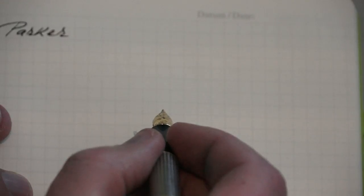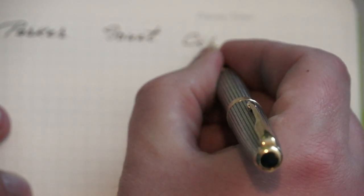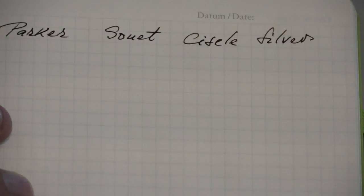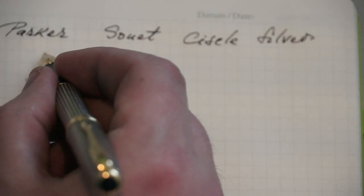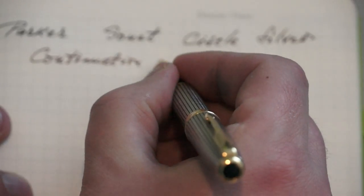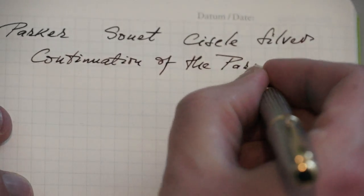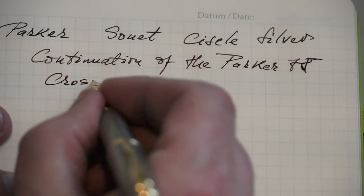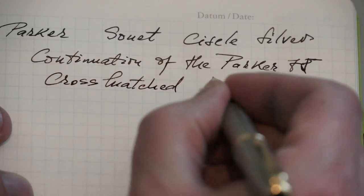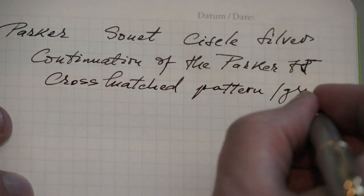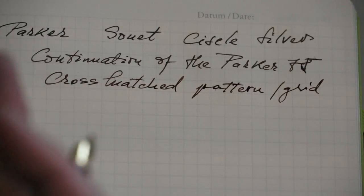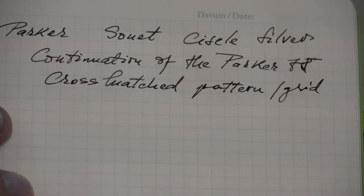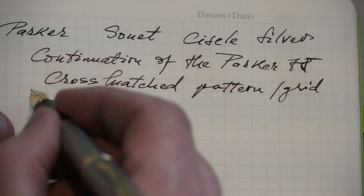This is the writing sample. This is the Parker Sonnet Cisele Silver. As mentioned before, this is a continuation of the Parker 75 family. And it has a cross hatched pattern or grid, and this gives it the classical elegance. This pen sets it off from all the others. Now this version too.